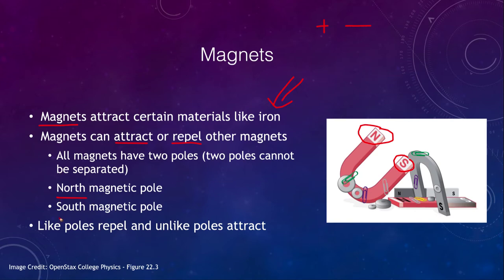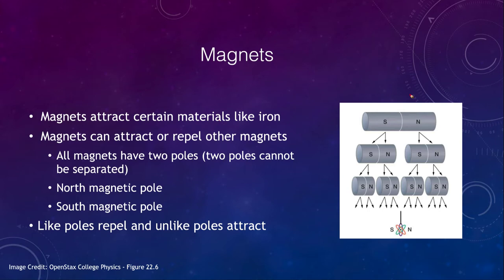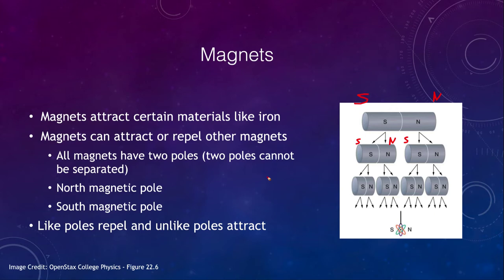We find that the two poles of a magnet cannot be separated. If we take a magnet which has a north end and a south end and cut it in half, it now has two magnets — it does not have just a south and just a north. The inside where you cut it becomes a new north and south. You can keep cutting all the way down to the atomic level. There is no way to separate the two poles — you cannot have what's called a magnetic monopole. Every magnet will have both a north and a south pole.